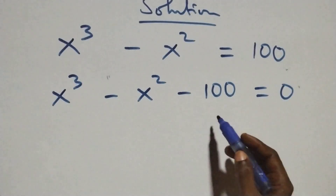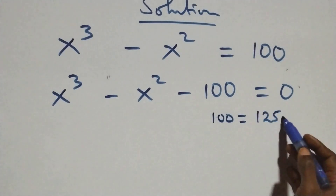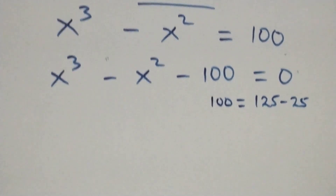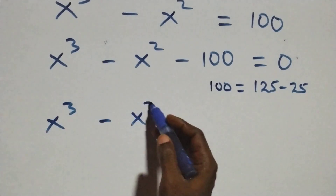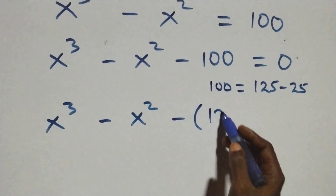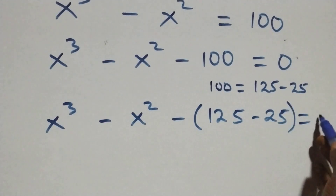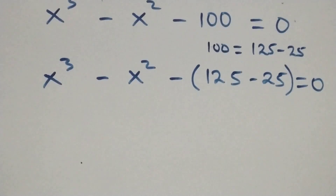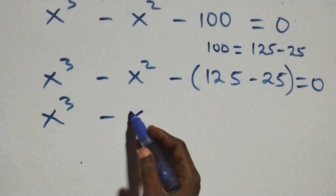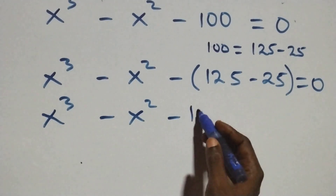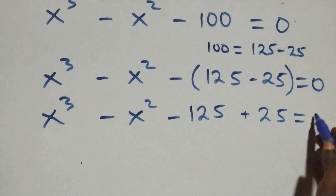From here we can write 100 as 125 minus 25. What we have becomes x cubed minus x squared minus (125 minus 25), equals zero. Opening the bracket: x cubed minus x squared minus 125 plus 25 equals zero.